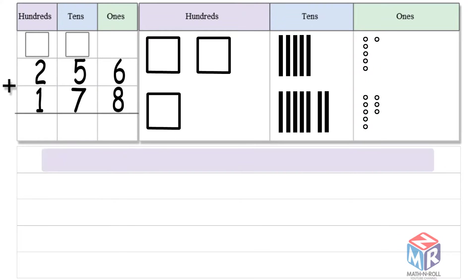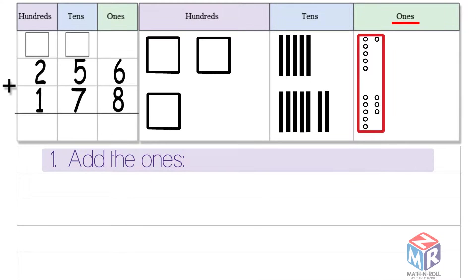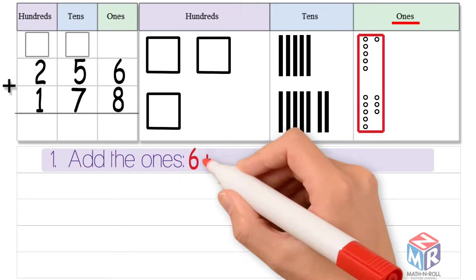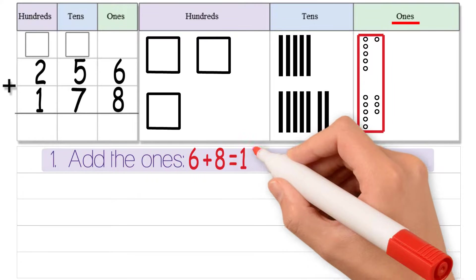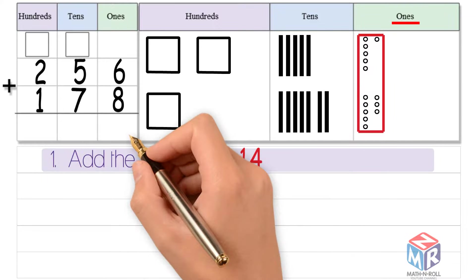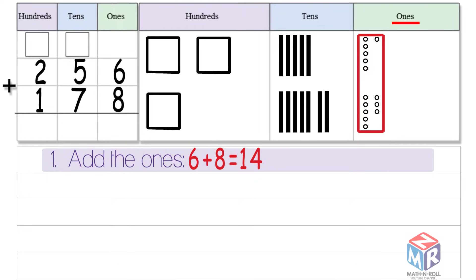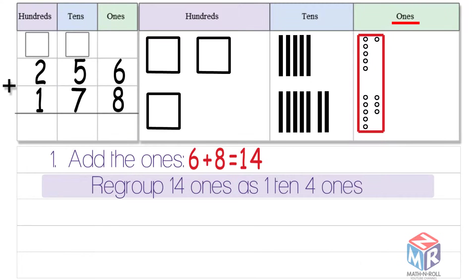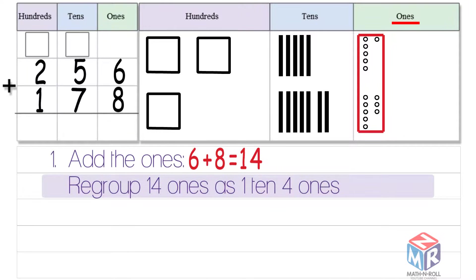First, we add the ones. 6 plus 8 is equal to 14. 14 cannot fit into the ones place because it's a two-digit number, so we regroup 14 ones as one ten and four ones.